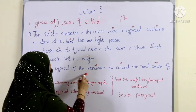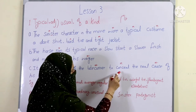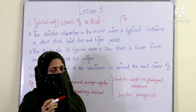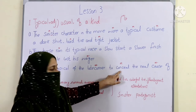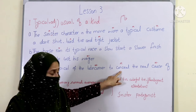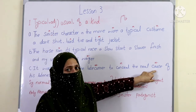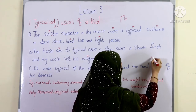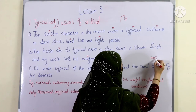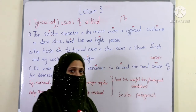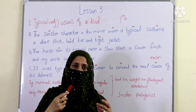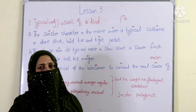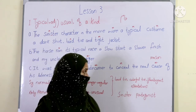The third sentence is: 'It was typical of the latecomer to conceal the real cause of his lateness.' A latecomer is someone who always comes late. 'Conceal' means to hide — he hides the real cause. 'Cause' means reason. This person always comes late to a party or seminar and always conceals, that is hides, the reason for his lateness.